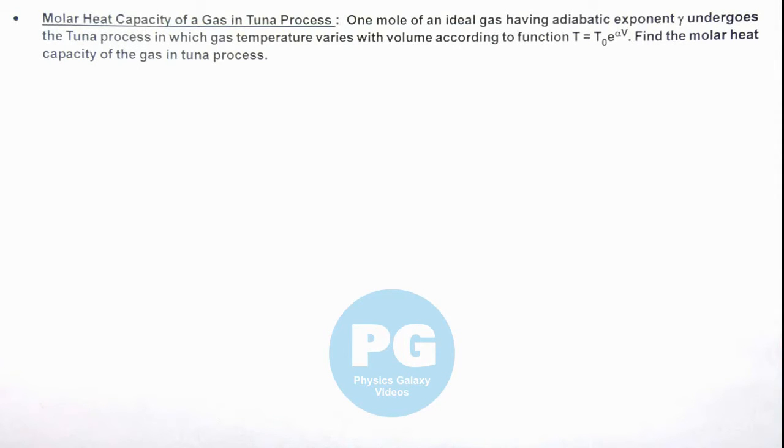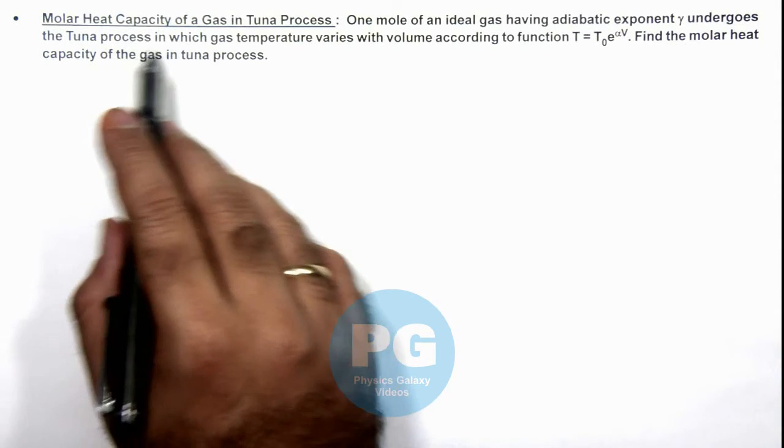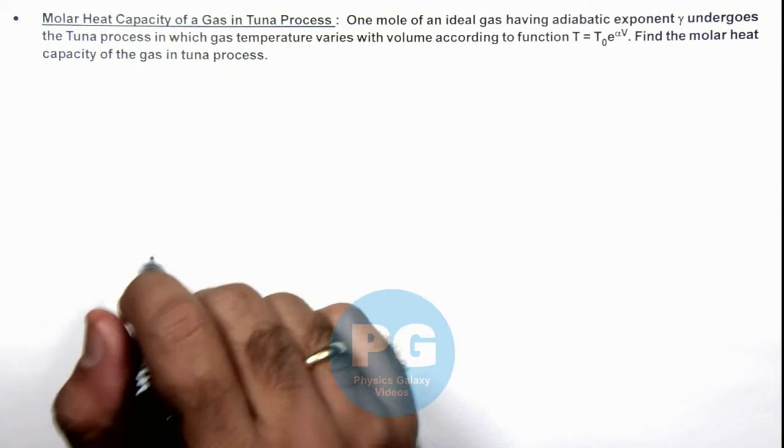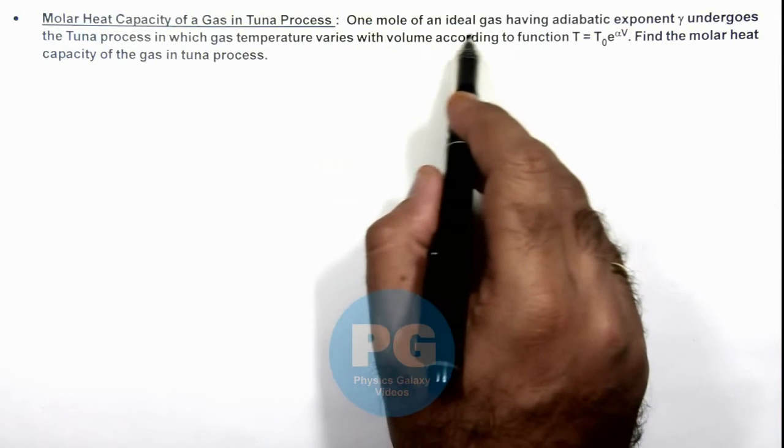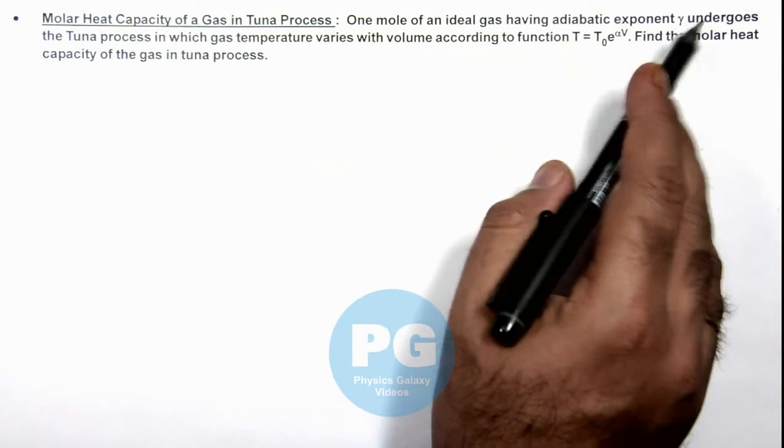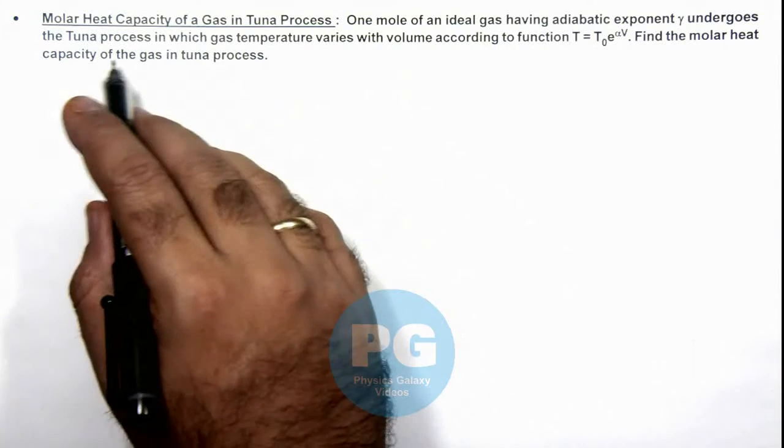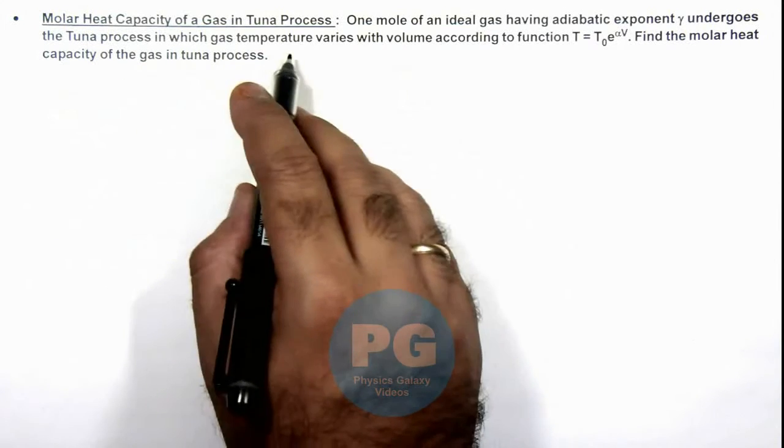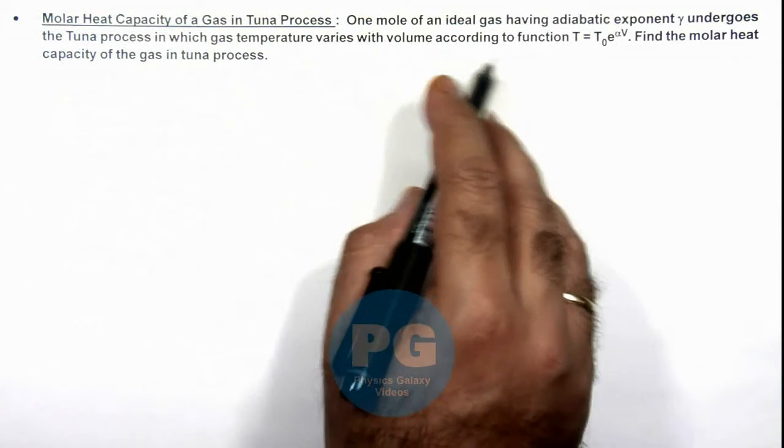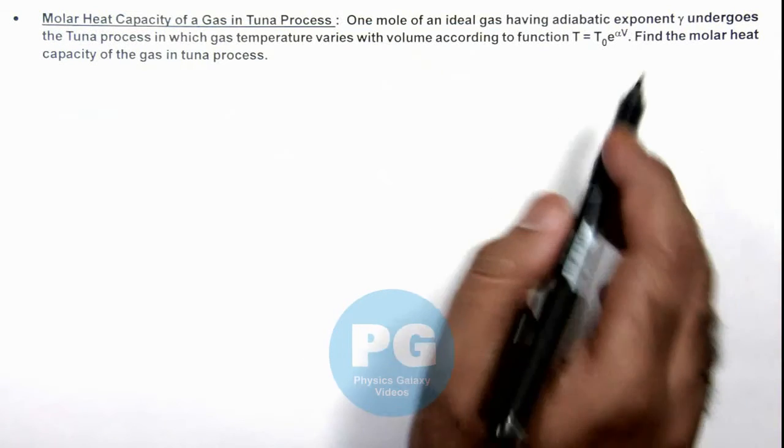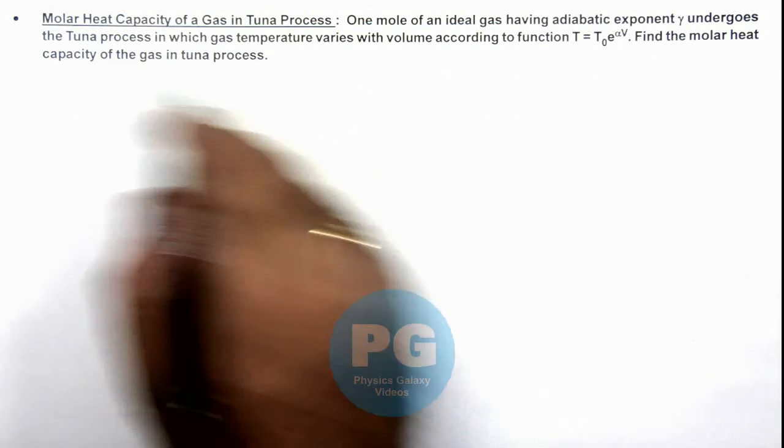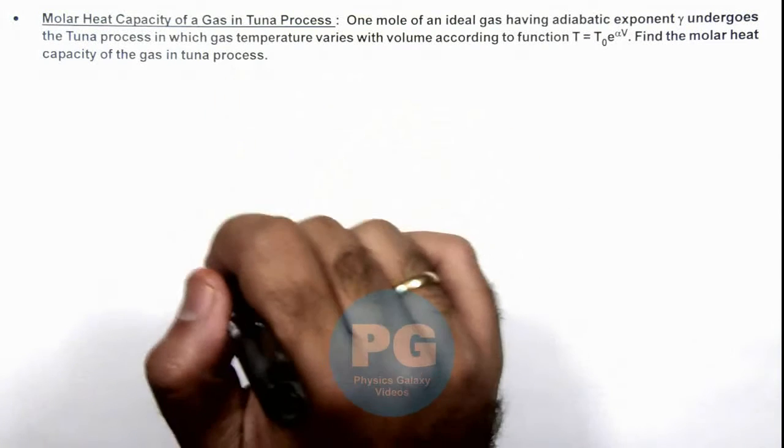In this illustration, we'll analyze the molar heat capacity of a gas in a tuner process. Here we are given that one mole of an ideal gas having adiabatic exponent gamma undergoes the tuner process in which gas temperature varies with volume according to the function T = T₀e^(αV). We are required to find the molar heat capacity of the gas in this tuner process.